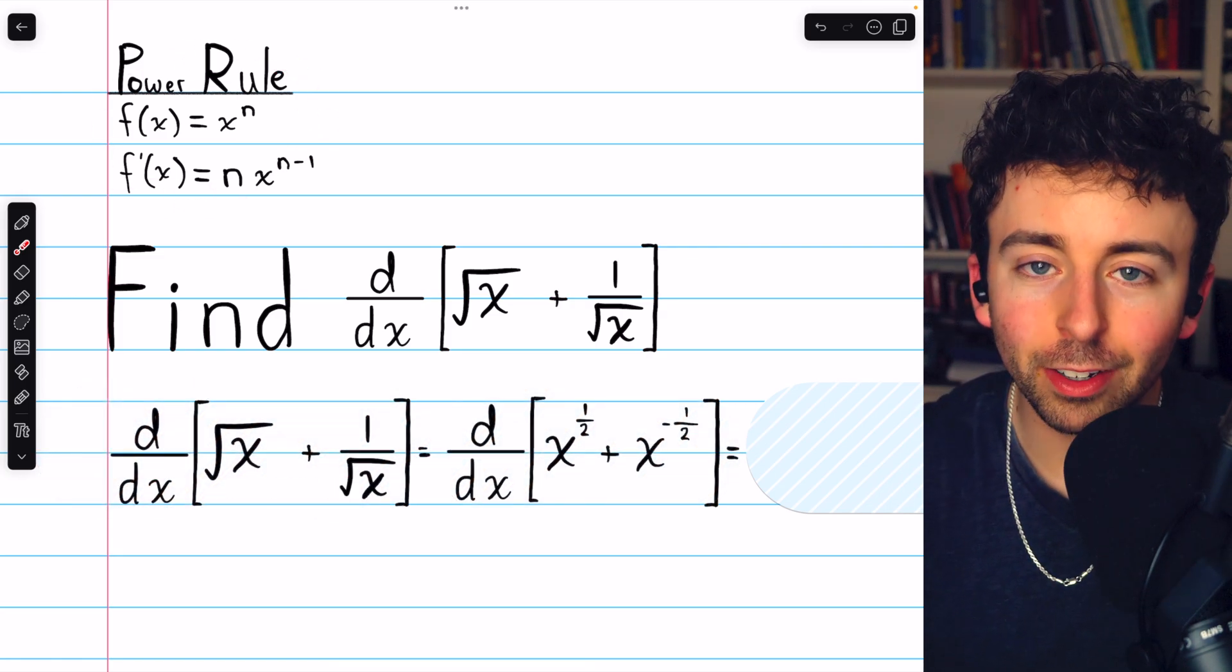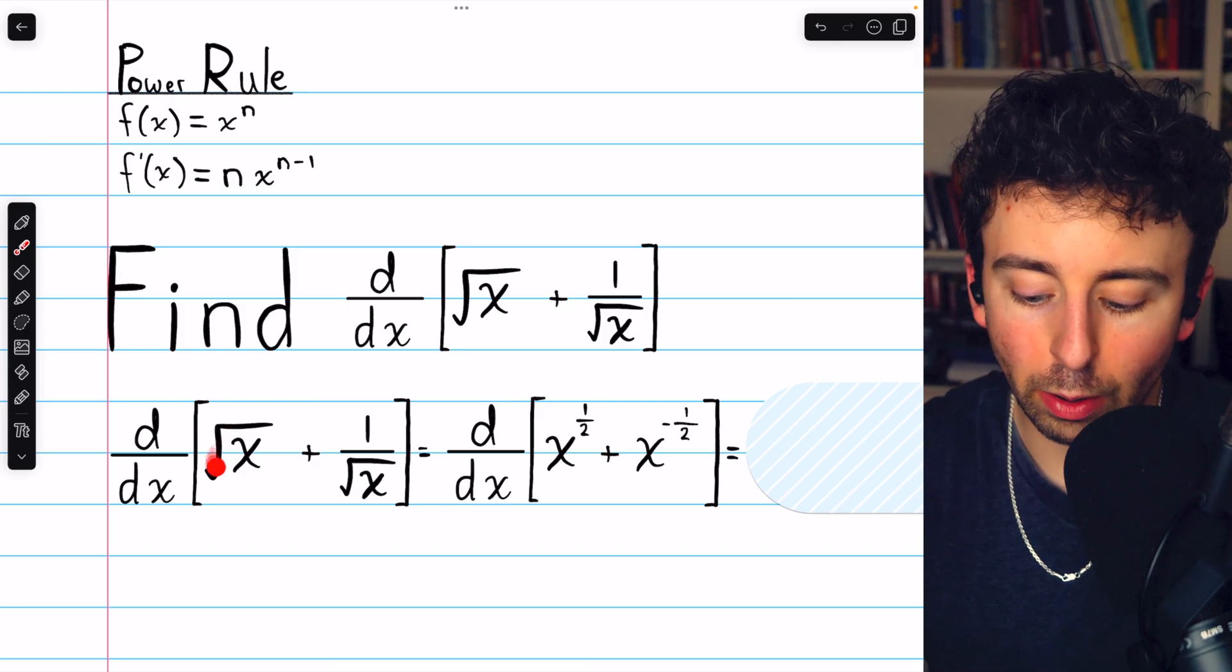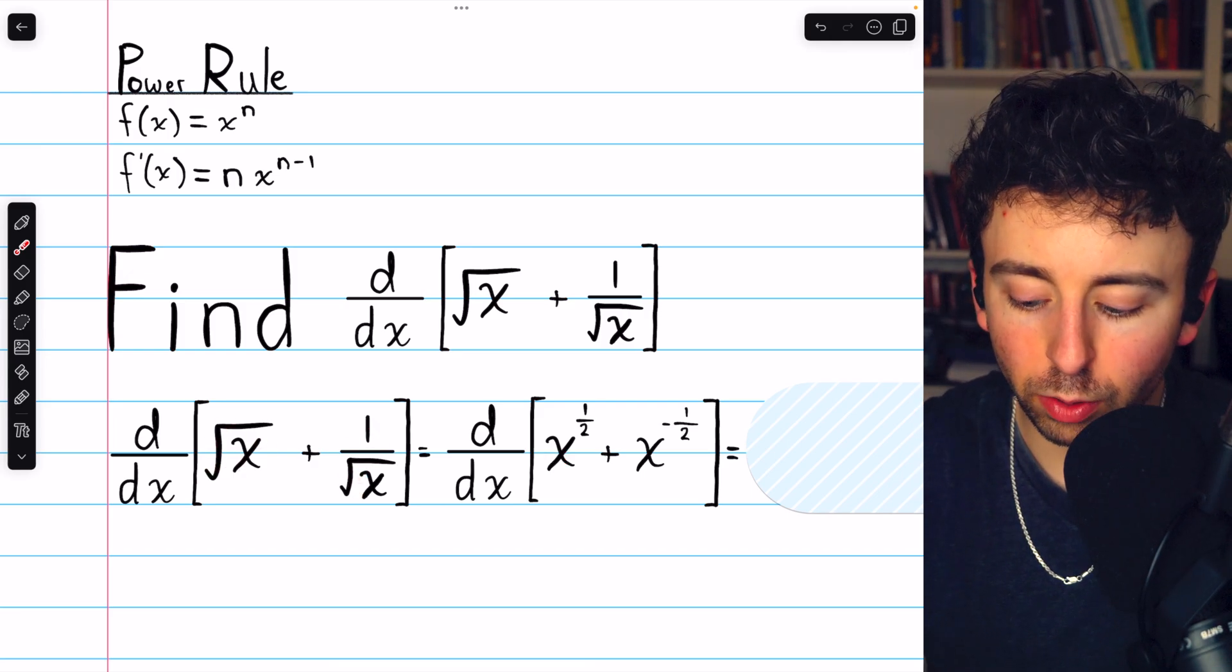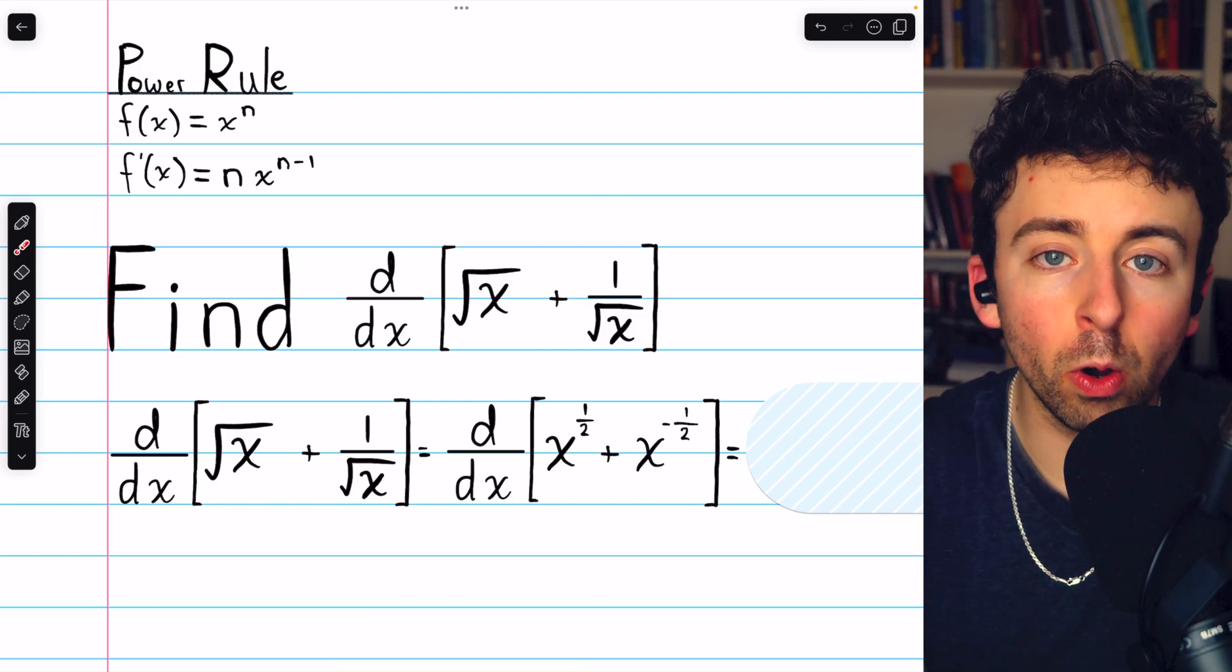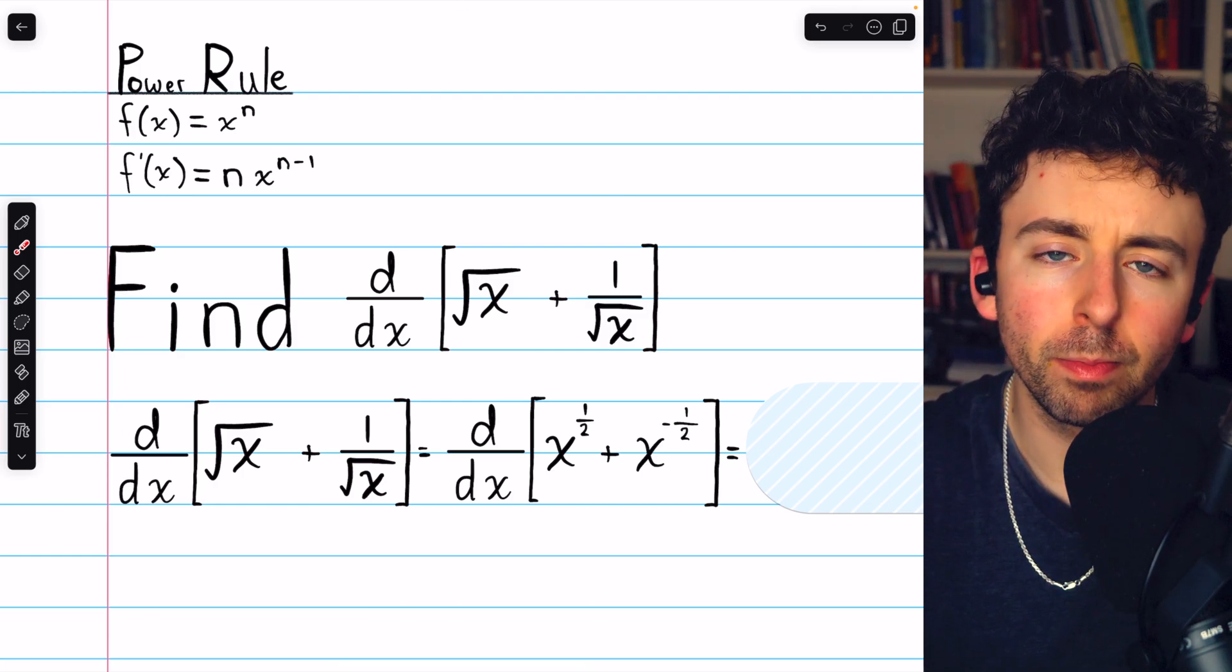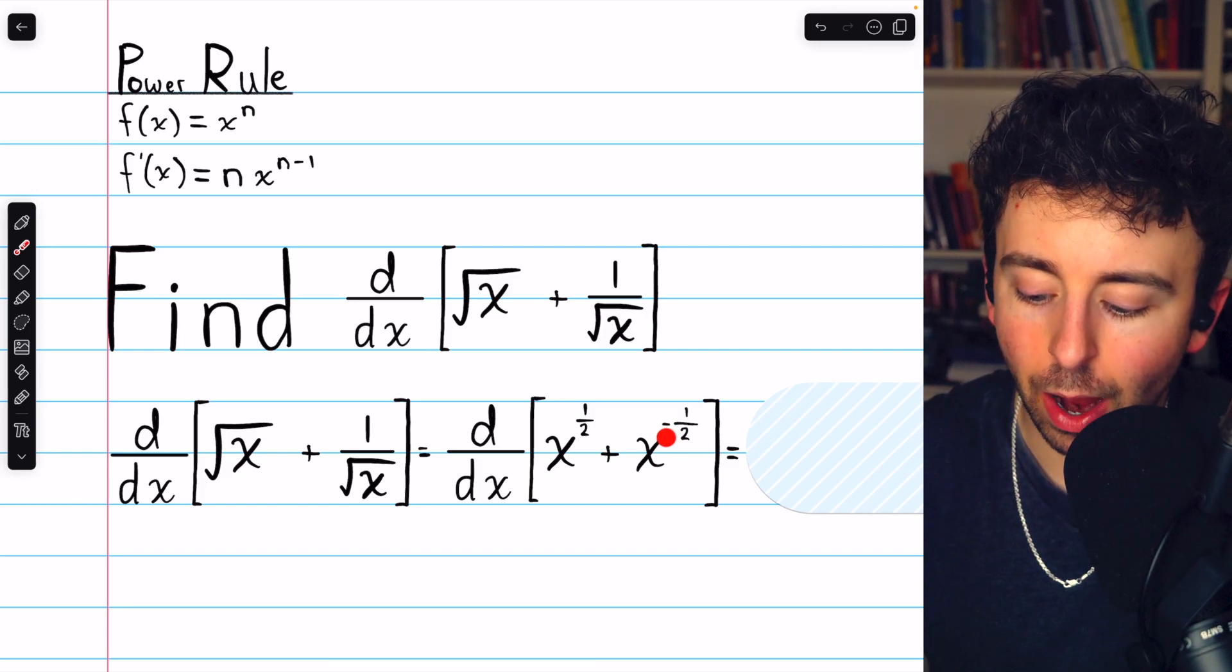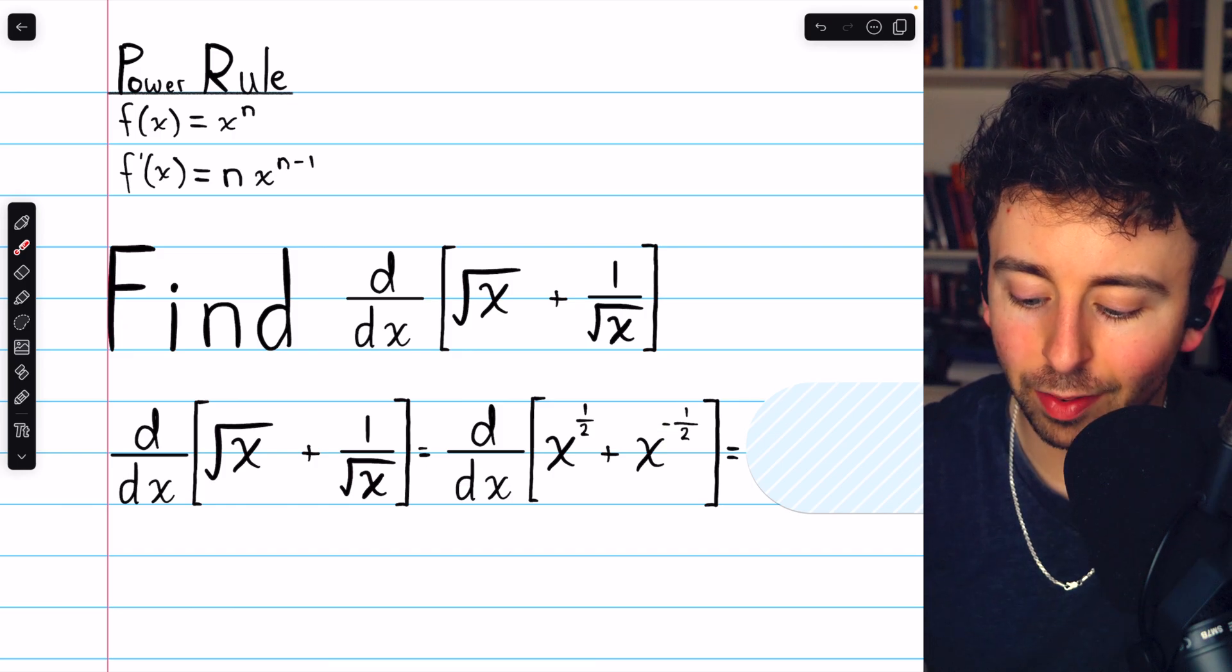Let's begin by rewriting these radicals as powers. The square root of x is just x to the 1 half, and 1 over the square root of x is 1 over x to the 1 half. But then we can move that x to the 1 half to the numerator by making its power negative. So, 1 over root x is x to the negative half.